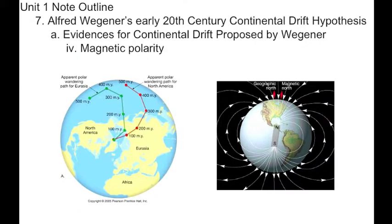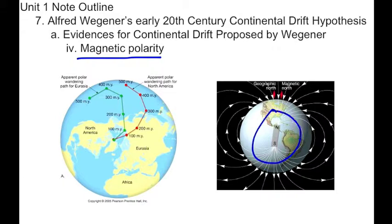A fourth evidence for the continental drift hypothesis is magnetic polarity evidence. This is the most confusing to understand of all the evidences we've looked at so far. Basically, the Earth's north pole and south pole act like a bar magnet, shown here to the right. Remember that it's reversed — the south pole of a bar magnet is actually towards the north, and the north pole is actually south. But we won't worry about that for now.